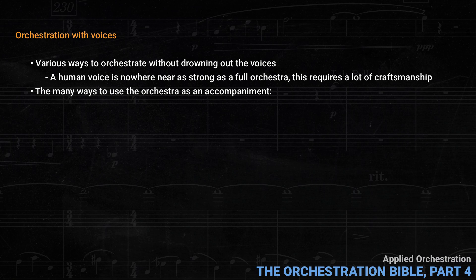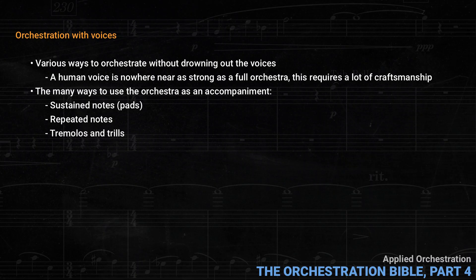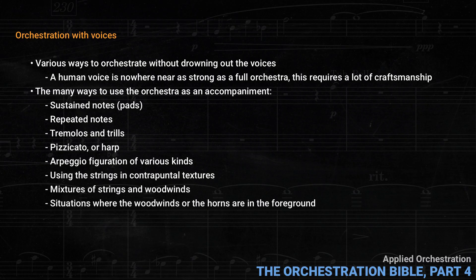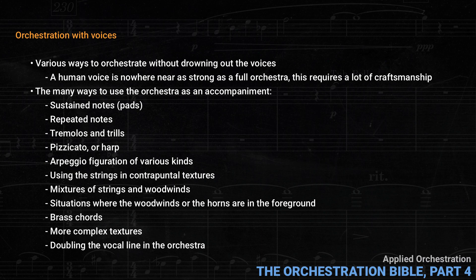Here are the various textures Koechlin discusses in detail, with many examples: sustained notes, or what we call today, pads; repeated notes; tremolos and trills; pizzicato or harp; arpeggio figuration of various kinds; using the strings in contrapuntal textures; mixtures of strings and woodwinds; situations where the woodwinds or the horns are in the foreground; brass chords; more complex textures; and doubling the vocal line in the orchestra. In discussing each of these, the examples always mention the emotional character required by the storyline of the opera.